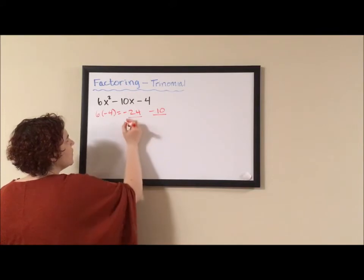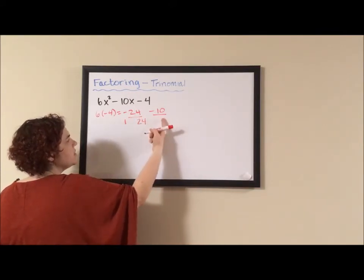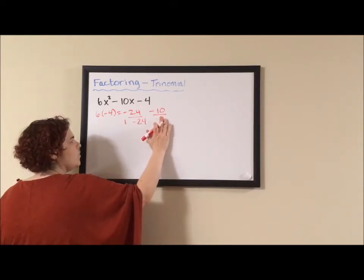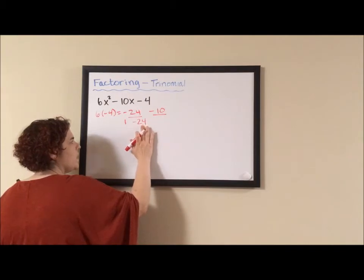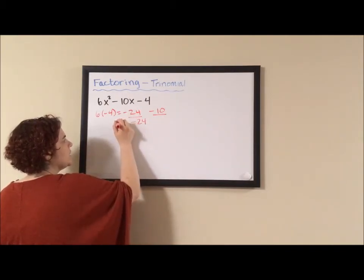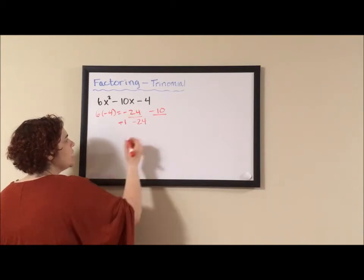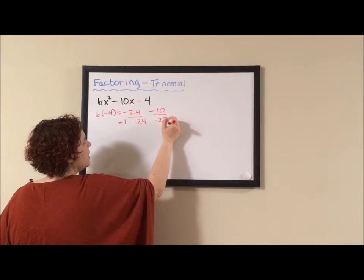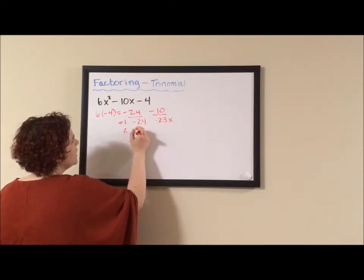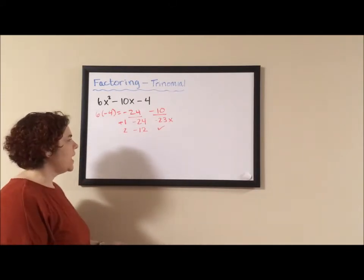My first factor pair for 24 is 1 and 24. Because the 10 is negative, the 24 has to be negative because whatever the sign of B is has to match the sign of your big factor. Because 24 is negative, the 1 has to be positive because the only way to multiply to a negative is if you have one of each and this is negative 23 and that is not correct. 2 and negative 12, well there you go. That does add up to negative 10.